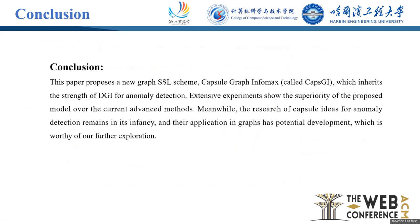Finally, we conclude our work. We propose a new graph SSL scheme, Capsule Graph Infomax, called CAPS-GI, which inherits the strength of DGI for anomaly detection. Extensive experiments show the superiority of the proposed model over the current advanced methods. Meanwhile, the research of capsule ideas for anomaly detection remains in its infancy, and their application in graphs has potential for further development, which is worthy of further exploration.